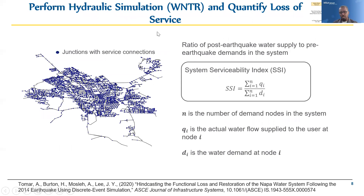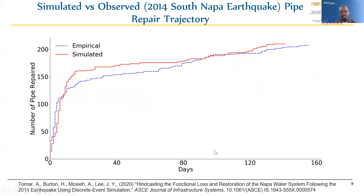Given that this is a water distribution system, we're using the system serviceability index (SSI) as our measure of functionality. The figure on the left shows the junctions with service connections within Napa, and the SSI basically averages the ratio of water flow supplied after the event relative to demand at the various junctions. We were able to get from the Napa Water Division data on the trajectory of repairs, and we used that data to ensure our model was giving us a realistic restoration trajectory — not necessarily matching exactly what was seen, but verifying that the shape is reasonably well aligned with what was observed.